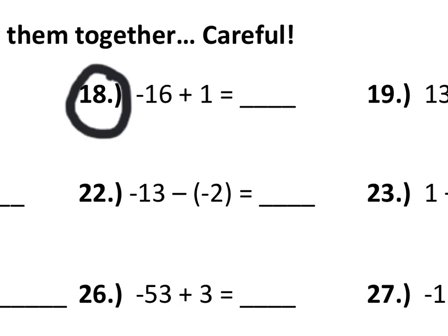In 18, for example, we're at negative 16, and we add 1. So that means we're becoming 1 less negative. Another way to say that, negative 16 plus 1 is negative 15. Negative 15 is 1 less negative than negative 16.